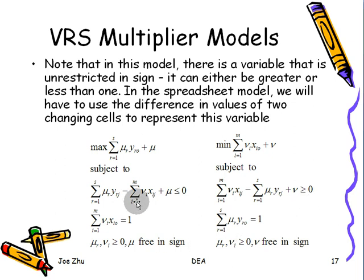Here I present the two models: one for input orientation and the other for output orientation. Note that in the input-oriented model, the VRS Multiplier Model is equivalent to the VRS Enveloped Model in the sense that you get the same efficiency score.